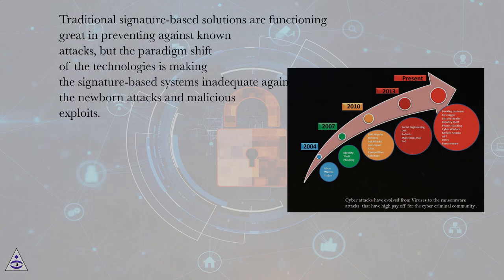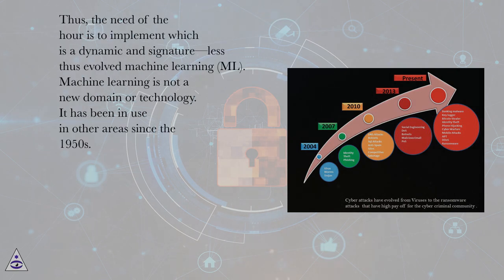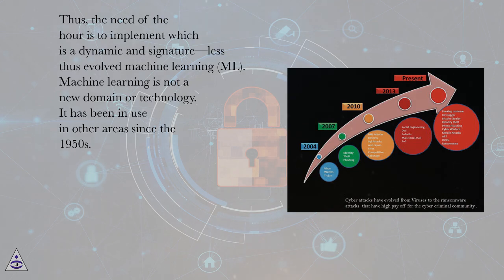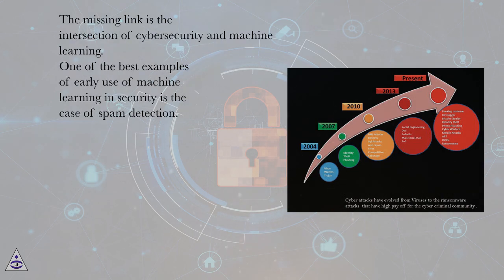Traditional signature-based solutions are functioning great in preventing known attacks, but the paradigm shift of technologies is making signature-based systems inadequate against new attacks and malicious exploits. Thus, the need of the hour is to implement a dynamic, signature-less approach — thus evolved machine learning, ML. Machine learning is not a new domain or technology; it has been in use in other areas since the 1950s. The missing link is the intersection of cybersecurity and machine learning.